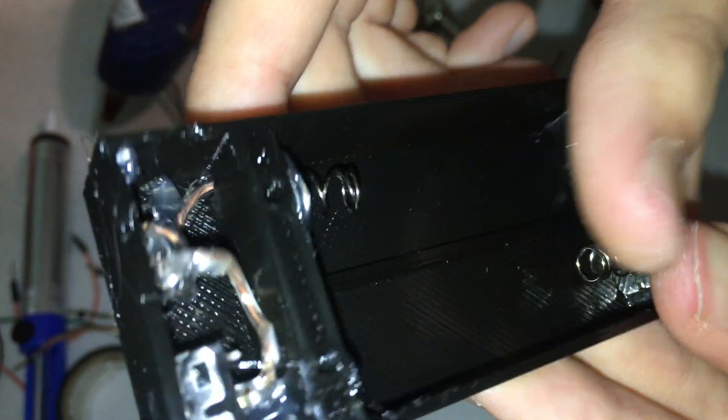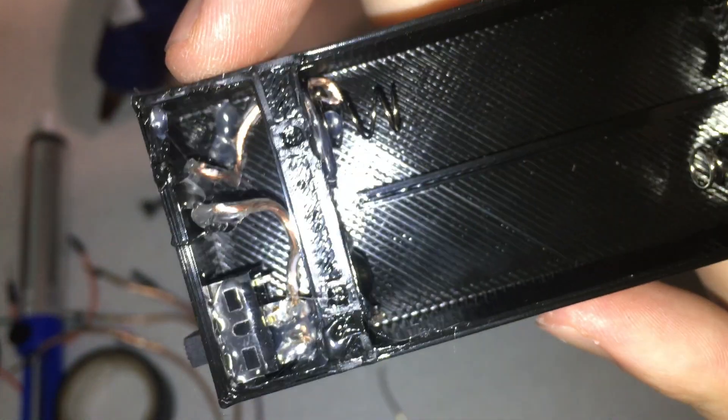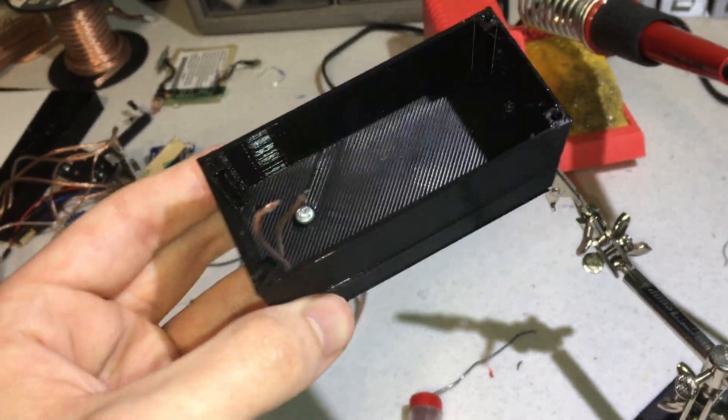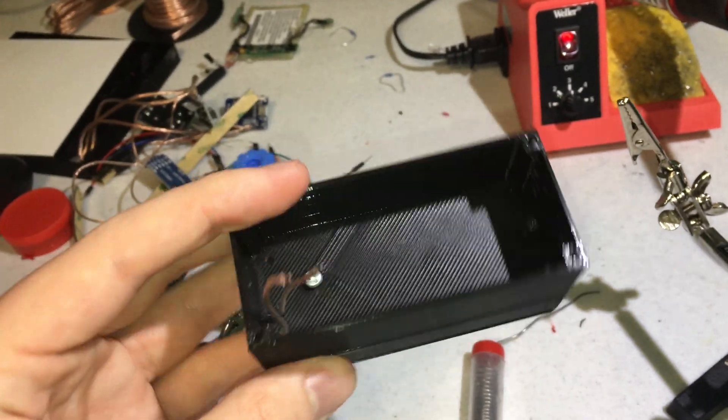Before soldering, I screwed the two main 3D printed pieces to each other using two small screws. I had to slide the wires through both of the projects. Then afterwards, it was time to solder and test.